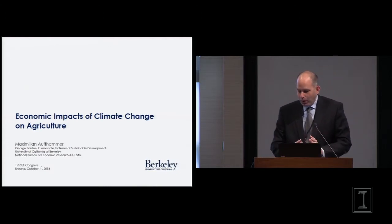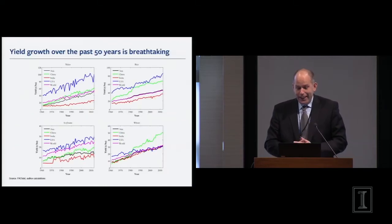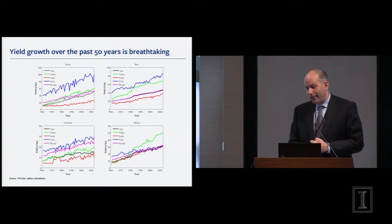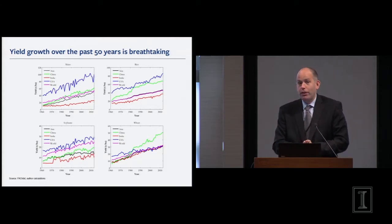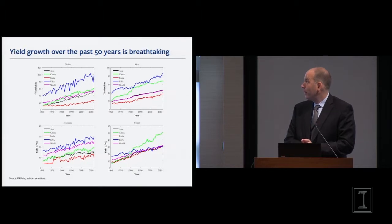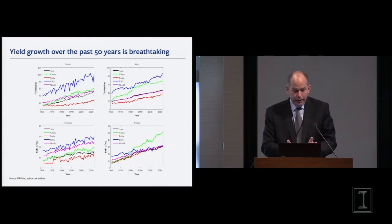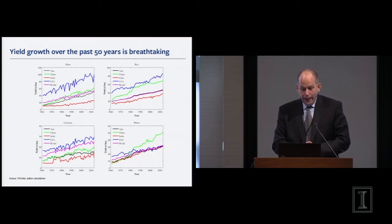Whenever I get worried about the future, for those of us who have small children, we spend a lot of time worrying, and I need to convince myself that we can find solutions, I look at this picture. This is a pretty amazing picture to me. This is the record of yields for the four main food crops in the world since 1960. Yields on average have at least doubled for most of the crops over this time period, which to me is just an incredible achievement.